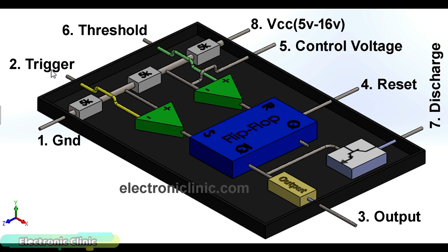As you can see clearly, three 5 kilo ohm resistors are connected between the VCC pin number 8 and ground pin number 1. This makes the voltage divider circuit, which creates two reference voltages — one-third and two-thirds of the VCC applied voltage. It has two voltage comparators marked with plus and minus. Plus is the non-inverting input while the minus is the inverting input.